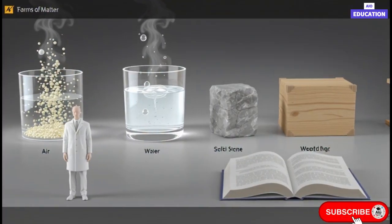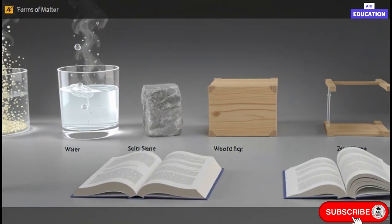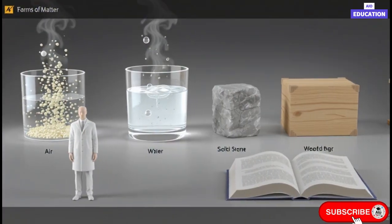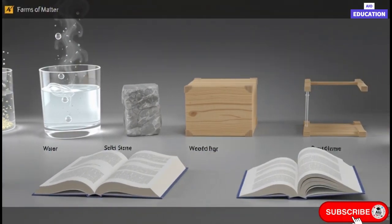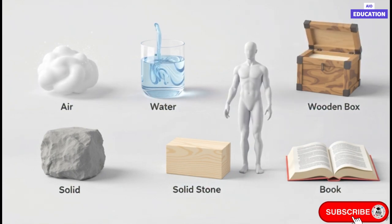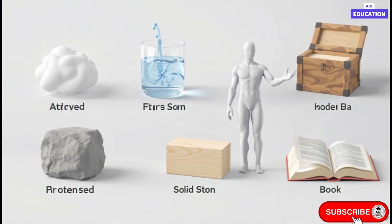But the question is, what exactly is matter made of? Scientists discovered that every substance, no matter how big or small, is made up of extremely tiny particles called constituent particles. These particles are so small that we cannot see them even with a normal microscope.